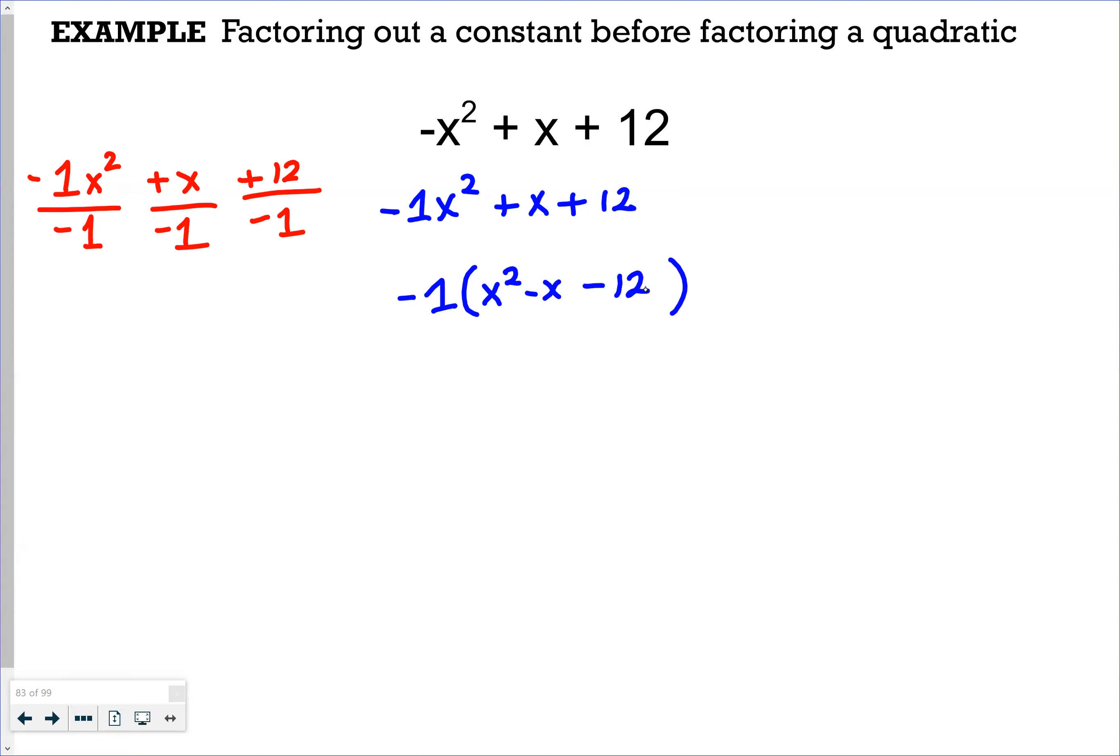So our GCF, we factored out -1. Our second factor is x² - x - 12. So now we have a simple trinomial here. To factor this is one of the easier ones. We're going to look at the coefficients for the trinomial. The leading coefficient a is 1.